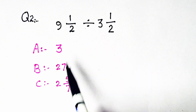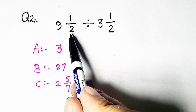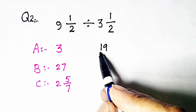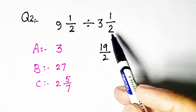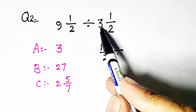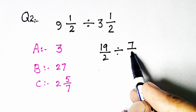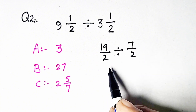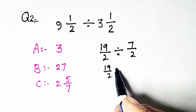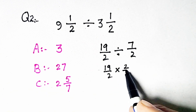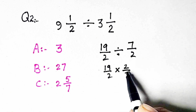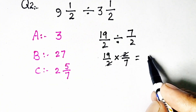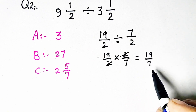Now come to its solution. 9 times 2 equals 18, plus 1 equals 19, divided by 2. Then 3 whole 1/2: 2 multiplied by 3 is 6, plus 1 is 7, giving 7/2. Now division is changed into multiplication: 19/2 times 2/7, and 2 cancels with 2, so we get 19/7.